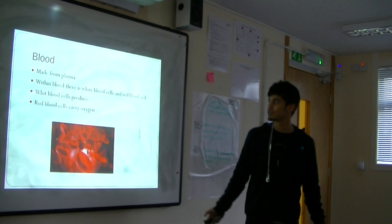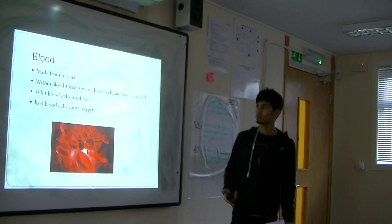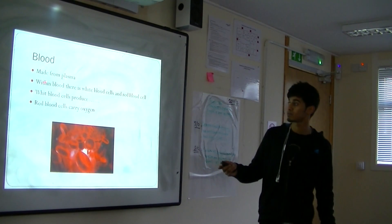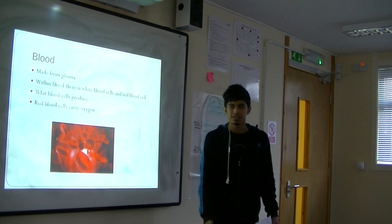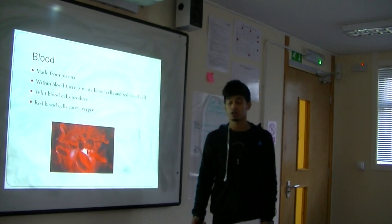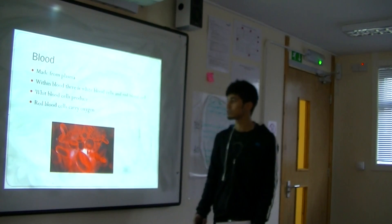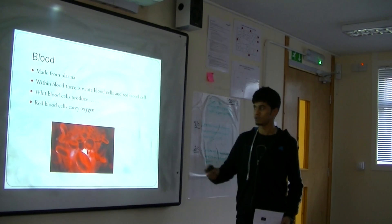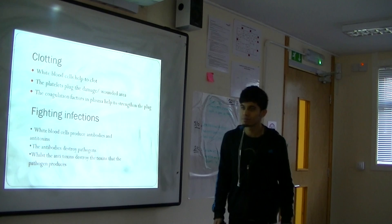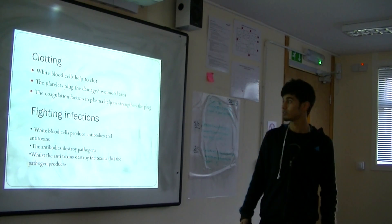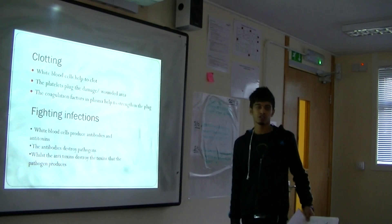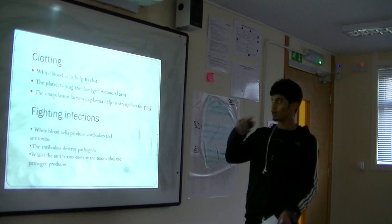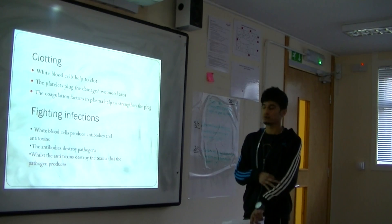Blood is red, which is caused by red blood cells. Within blood, there are also white blood cells and plasma. White blood cells produce anti-toxins and antibodies, which help us fight against infections. Red blood cells carry oxygen using haemoglobin. Blood cells can also plug damage to wounds so no bacteria can enter. The coagulation factors in plasma help strengthen the plug and leave a scab.